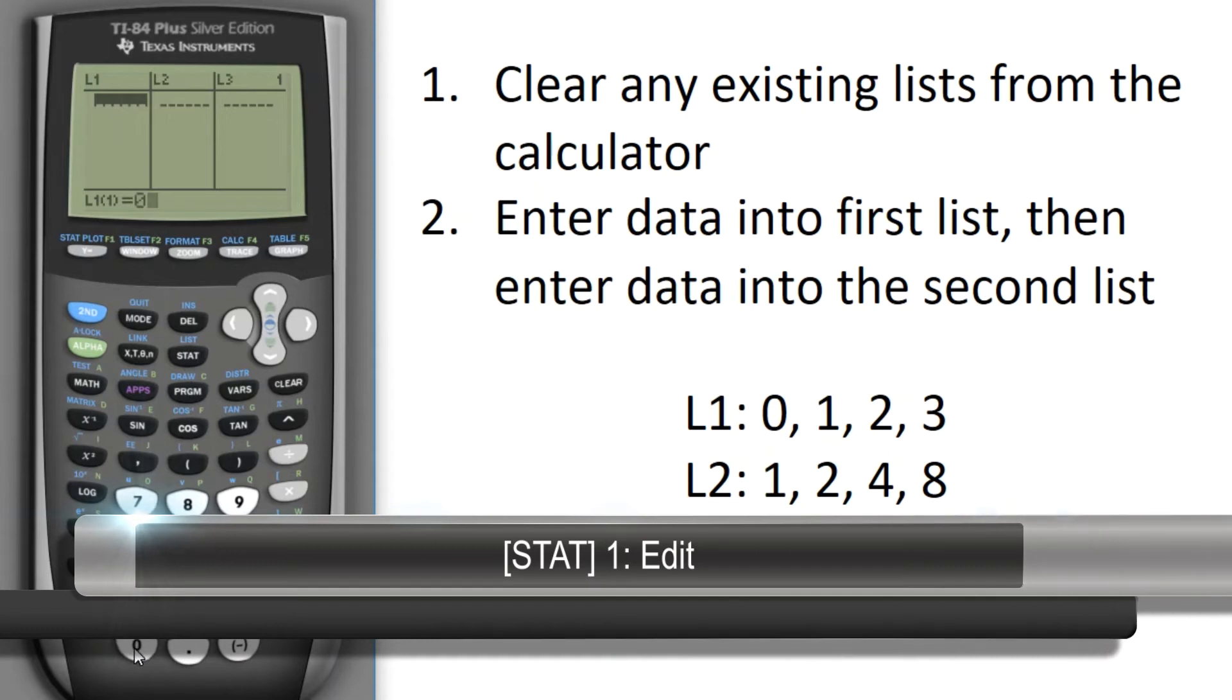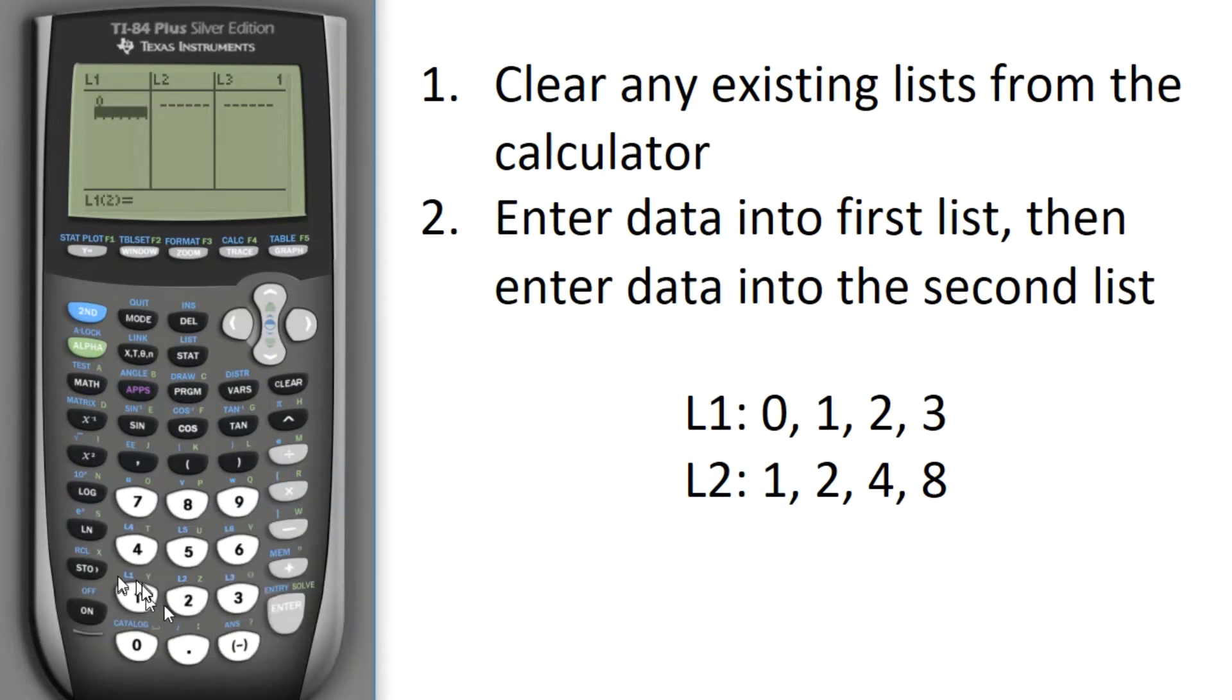I'm going to enter 0. Notice how it says list 1 item 1 equals 0. I hit Enter and that's now put in there. 1, so list 1 item 2 is 1, then I'm going to put in 2, and then 3, and now I'm ready to move over to list 2. I only want to use 2 lists here.